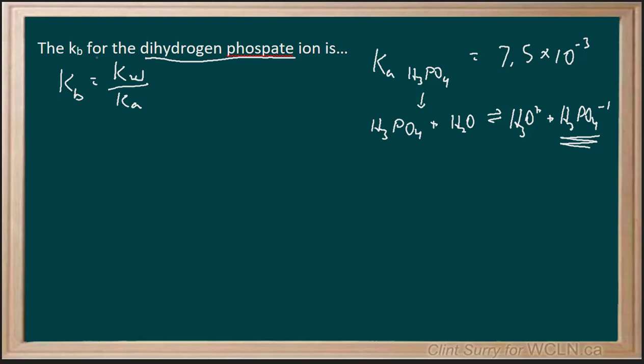So for the base, we're looking at the product side. So our KW here is going to be 1.0 times 10 to the minus 14 over 7.5 times 10 to the minus 3.